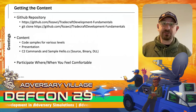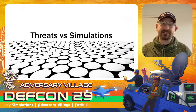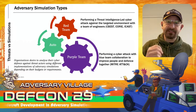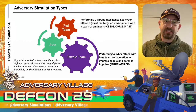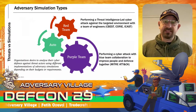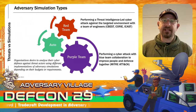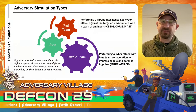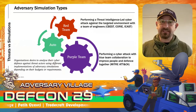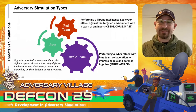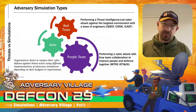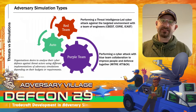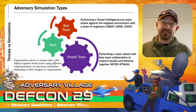I will talk about threats and simulations. We have different levels and colors of adversary simulations. Red team is the most interesting because we start with zero information, need no collaboration, and try to infiltrate the organization just like a threat actor. In purple team exercises we collaborate — the blue team joins, which can be threat intelligence, a security operations center, incident response teams, or reverse engineering teams. Offensive teams can be red team, penetration testing, or automated breach-and-attack simulation tools.